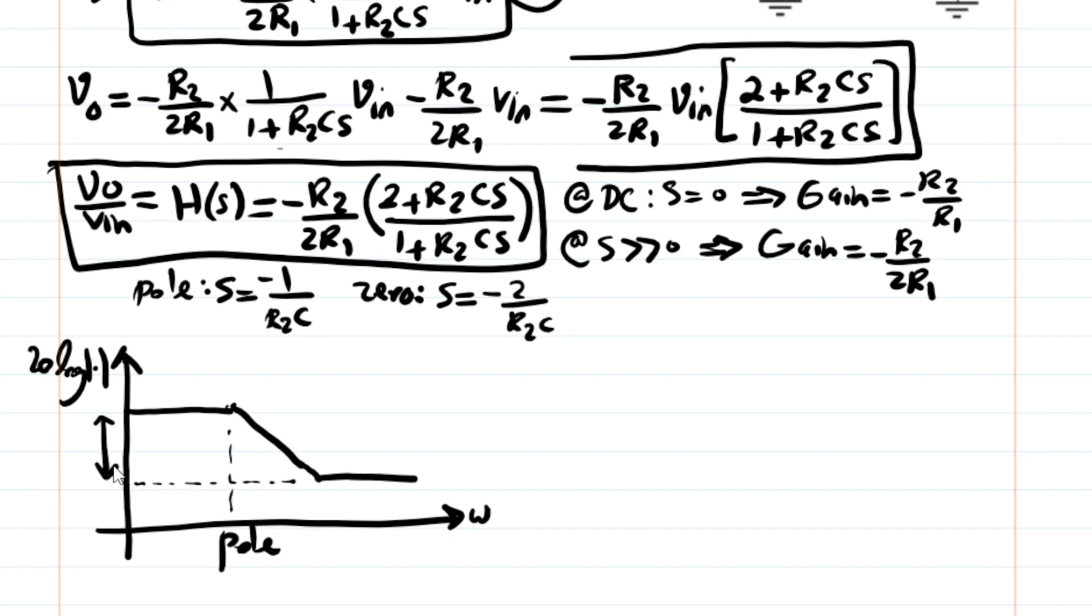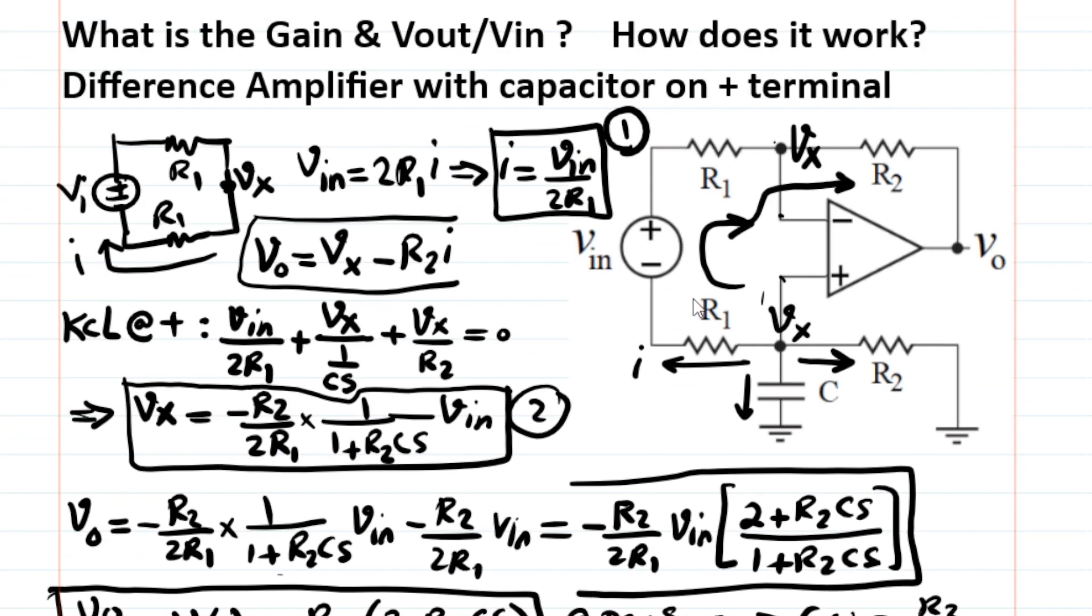So the gain drops by half, which translates to, as you expect, because the gain is dropped by half, you expect 6 dB drop in magnitude response. That's 20 log 1 over 2. So this is also confirmed by the Bode plot. I hope that this is helpful in terms of understanding what this circuit is doing. And what is the transfer function, and what is the gain.